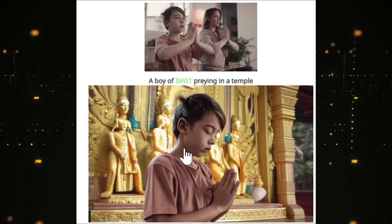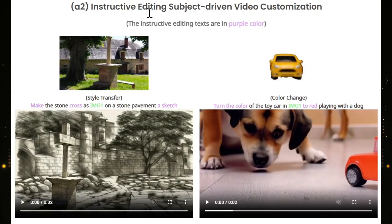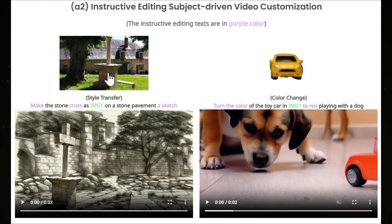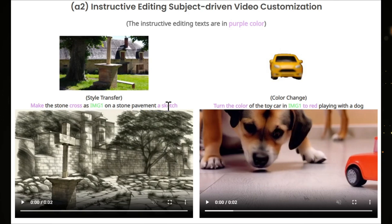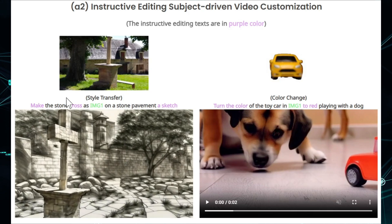There's another example of a boy from image one playing in a temple, and it does look like the boy is playing in a temple. Here's another use case: instructive editing subject-driven video. You can change the style and color from an input image — for example, make the stone cross from image one on a stone pavement appear as a sketch.